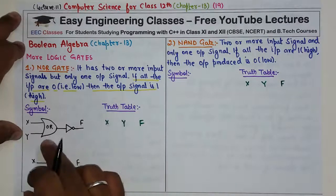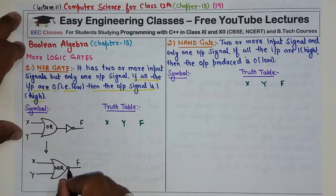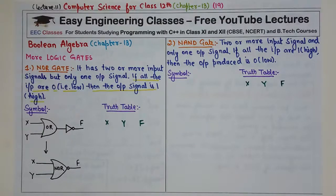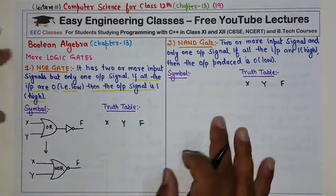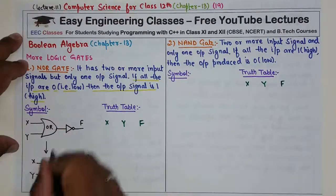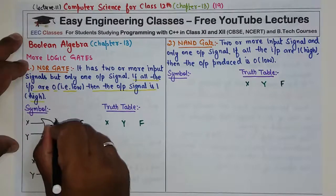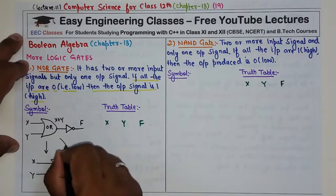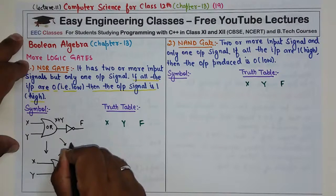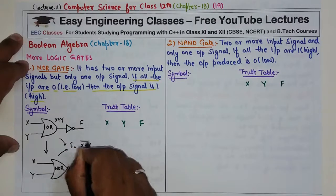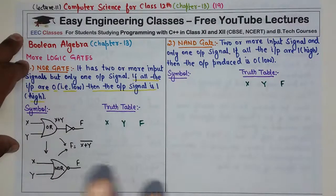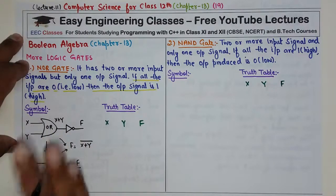Question mein dhyan dena ki agar OR gate ke aage chhota circle hai toh woh NOR gate hai. OR gate ki equation output ki x plus y hoti hai, aur yahan humne isko NOT gate se pass kar diya. That means f equals x plus y ka bar — matlab OR gate se aaya x plus y, usko humne invert kar diya — yahi NOR gate ka output hai.